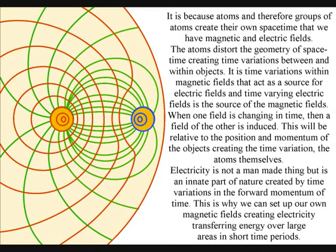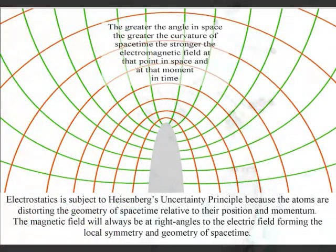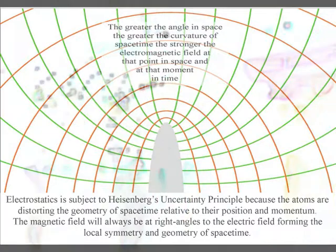A time-varying electric field acts as a source of a magnetic field, and a time-varying magnetic field are the source of electric fields. When either field is changing in time, then a field of the other is induced.